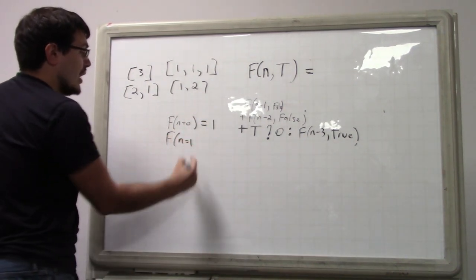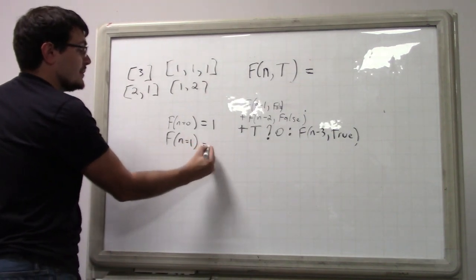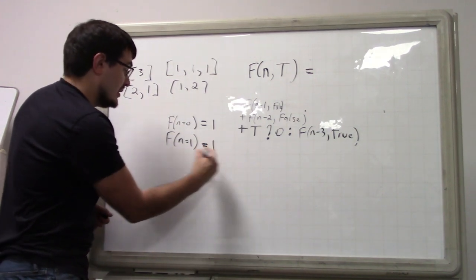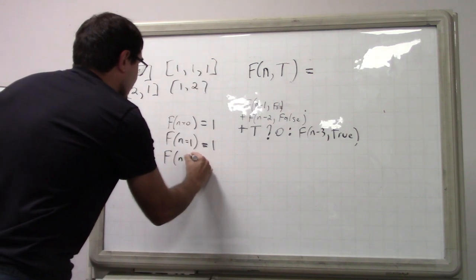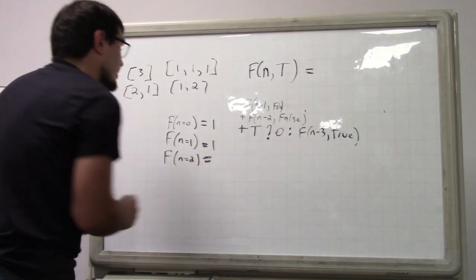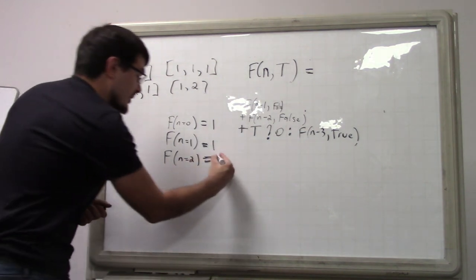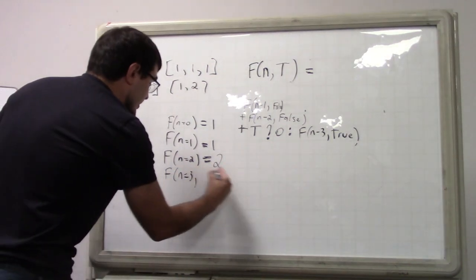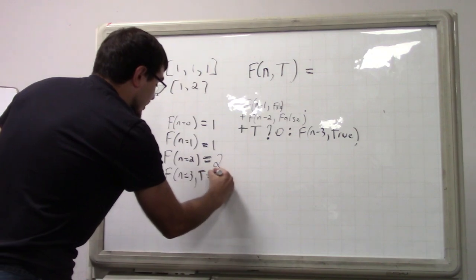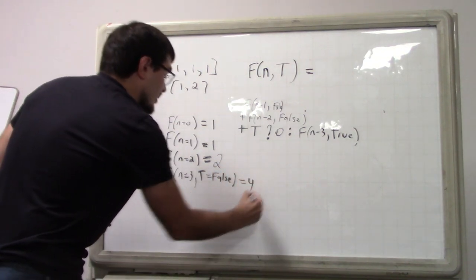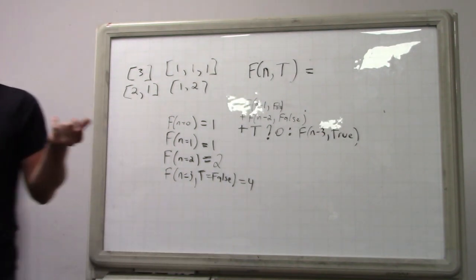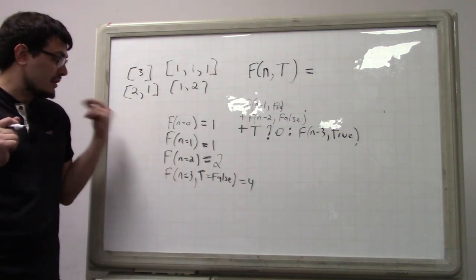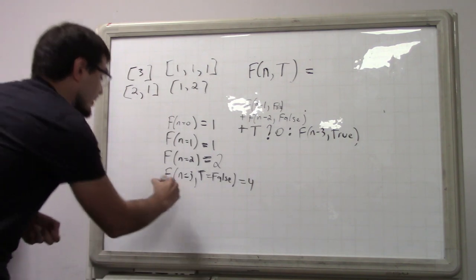F(2) equals 2 — you can take two steps, or one and one. For n equals 3, it depends on whether you're tired or not. If you are not tired, it equals 4: you can take 2 and 1, 1 and 2, three ones, or the single step of 3. But if you are tired, it's only 3.